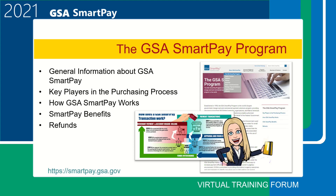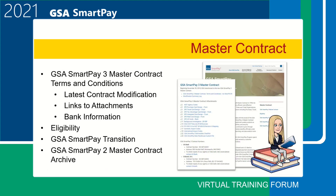The GSA SmartPay website houses the most recent copy of the GSA SmartPay 3 master contract, including the latest contract modifications, links to attachments, and contractor bank information. There is also information on who is eligible to use the GSA SmartPay Master Contract, as well as historical information. The GSA SmartPay contracting officer determines eligibility. Currently, state and local governments are not authorized to use the program. Agency task orders are not housed on our website; to obtain a copy, you must contact your bank directly.